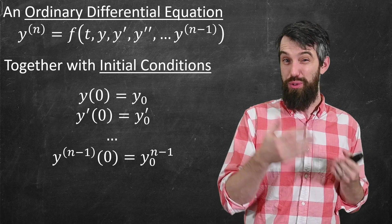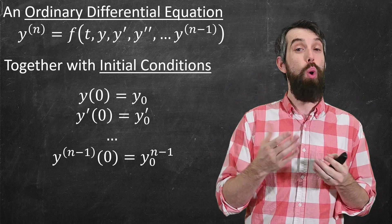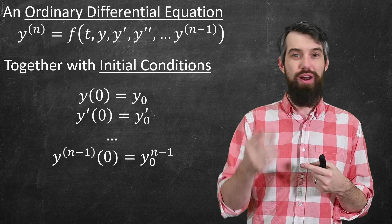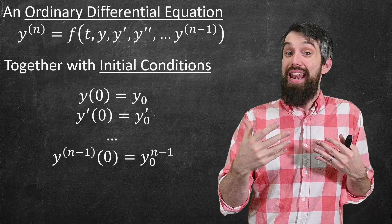When I say y of 0 is y naught, y naught is just my shorthand for some constant that will be specified. Y naught prime is some constant that will be specified again. Whenever I write this little subscript 0, I call it naught. And I just mean by that it is a constant.